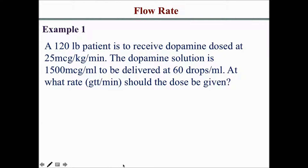This video will show you step-by-step how to solve flow rate problems. For example one, you have a 120-pound patient who is to receive dopamine at a dose of 25 micrograms per kilogram per minute. The dopamine solution is 1,500 micrograms per mL and is to be delivered at 60 drops per mL. At what rate in drops per minute should the dose be given?